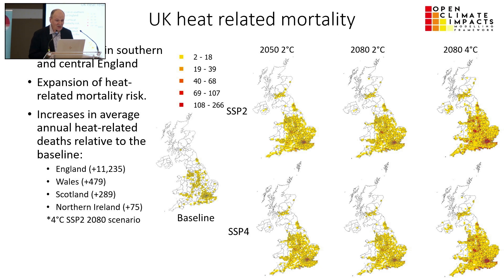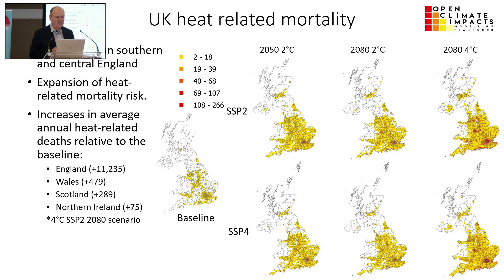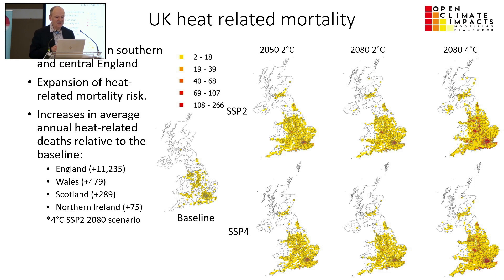Maps are very important, so we can look at these results in a spatially explicit way. Not surprisingly, the issues are greatest in southern and central England. But with time there's a northerly movement — you start to see problems emerging in the central belt of Scotland with mortality happening there. The numbers are still overwhelmingly greatest in England, but in Wales, Scotland, and Northern Ireland with 4 degrees, there are significant increases in deaths.